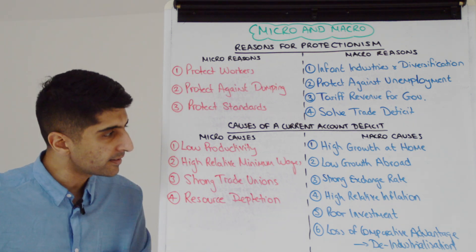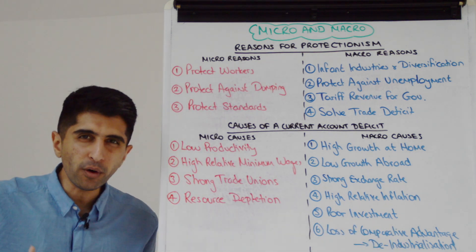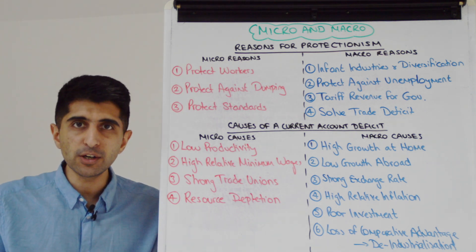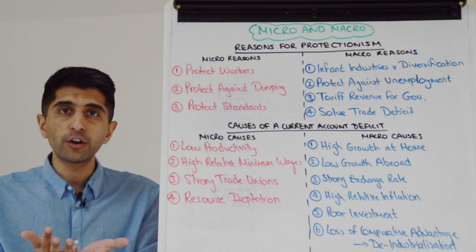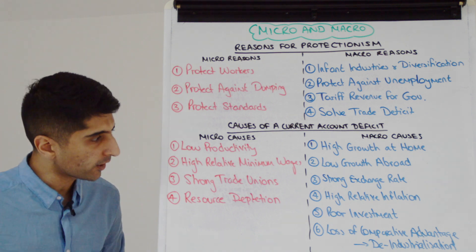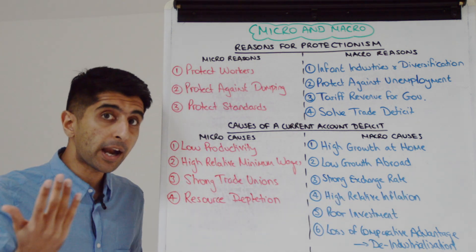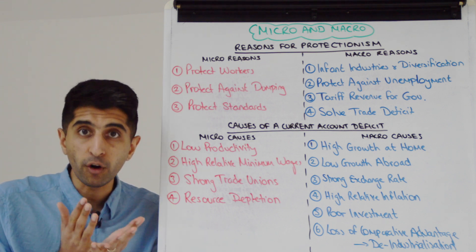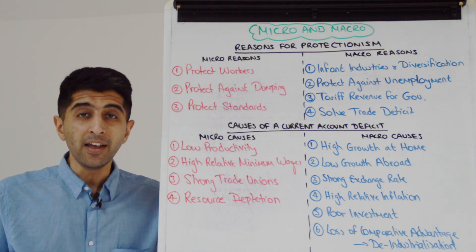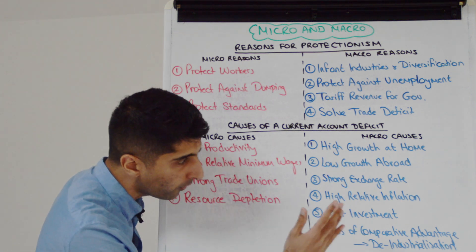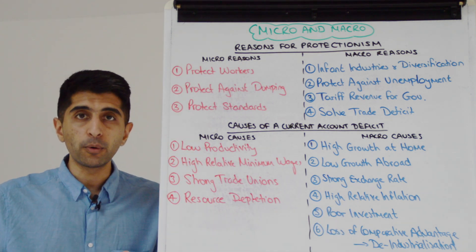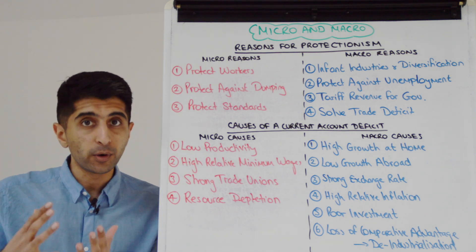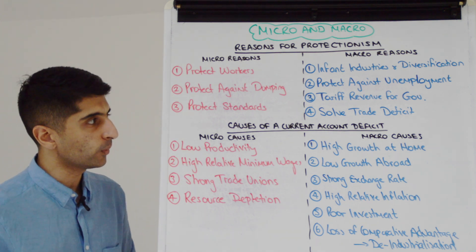High relative inflation — higher inflation relative to other countries, especially major trading competitors — makes our exports less competitive. Poor investment at home by domestic firms means technology and capital machinery may be outdated, which drives up costs, keeps export prices high and uncompetitive, and leads to a loss of comparative advantage. Countries abroad can then beat us on comparative advantage, causing de-industrialisation, structural unemployment, and a shift from exports to imports, which can drive a current account deficit.